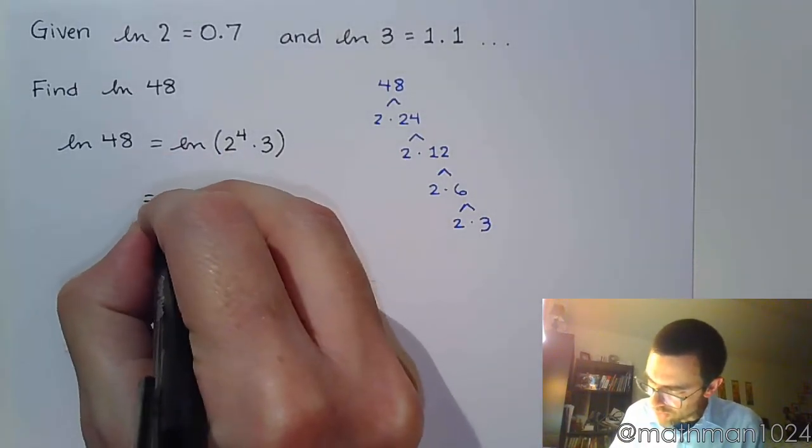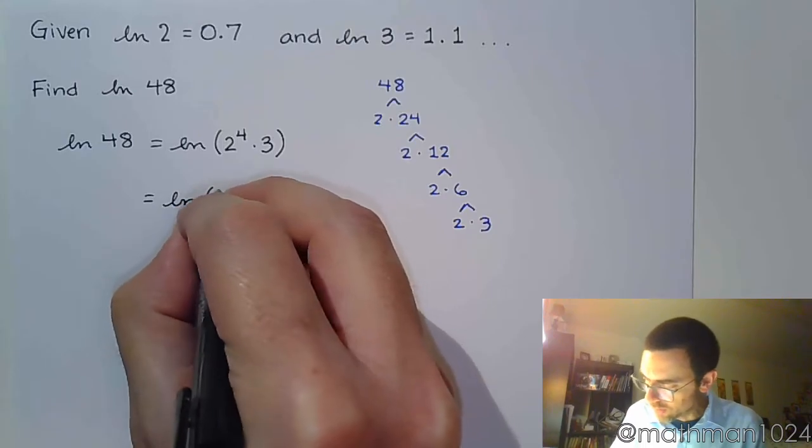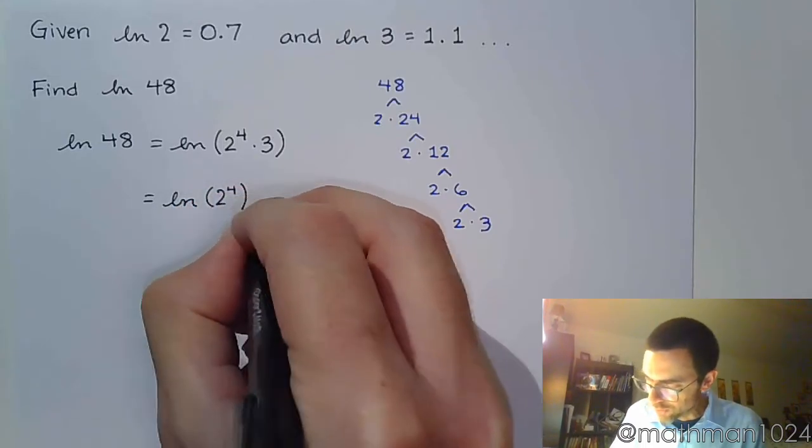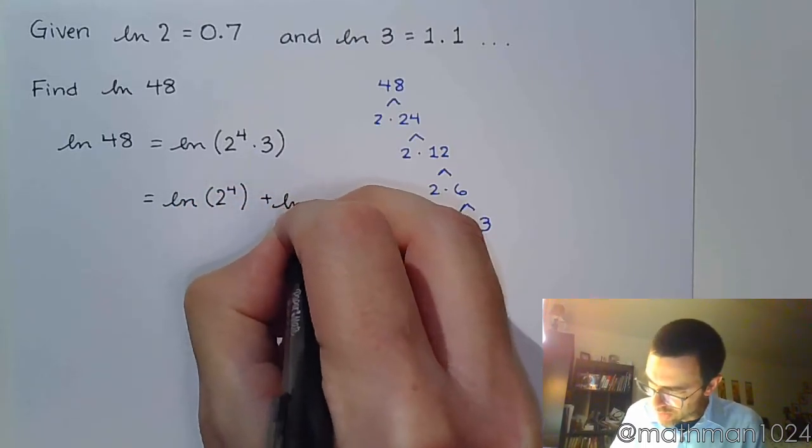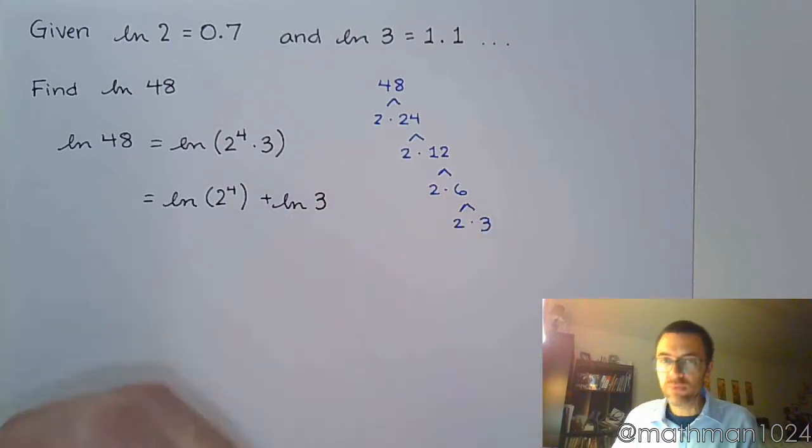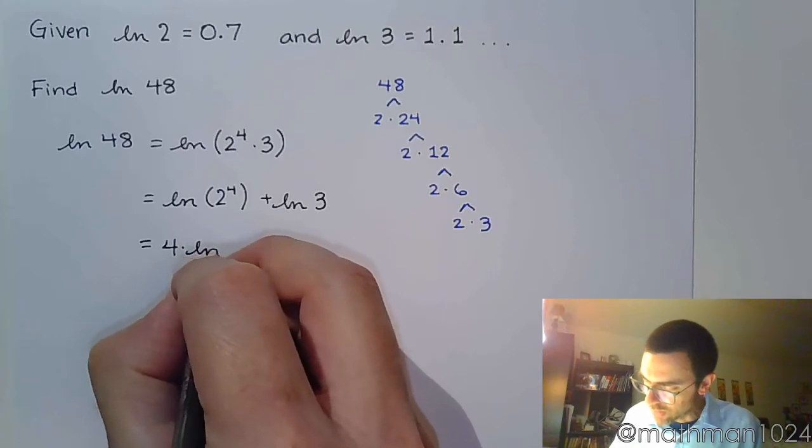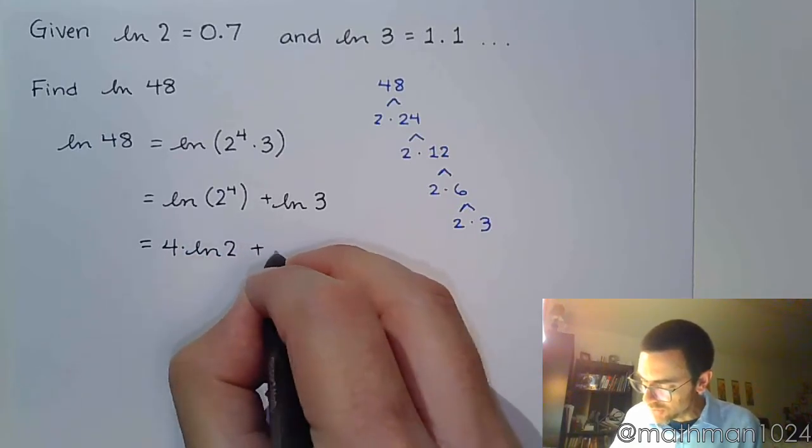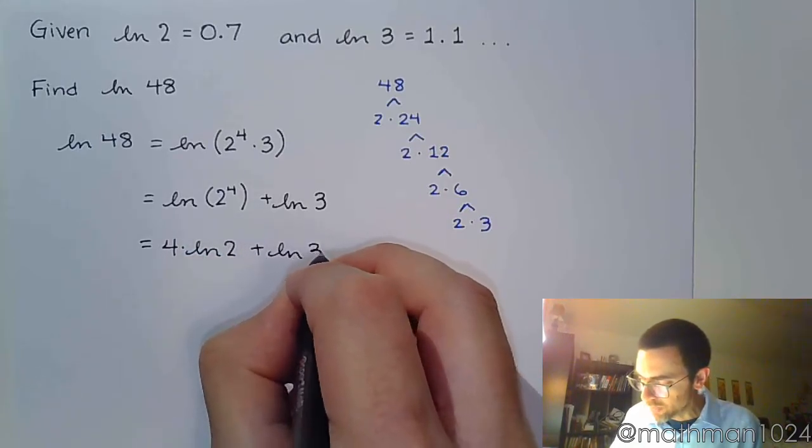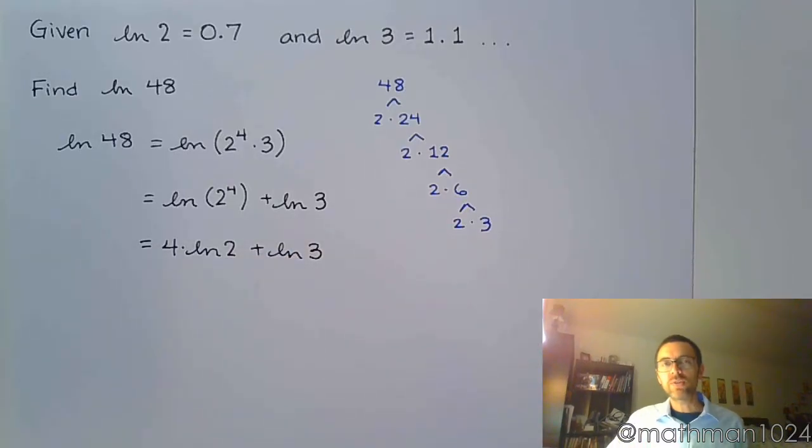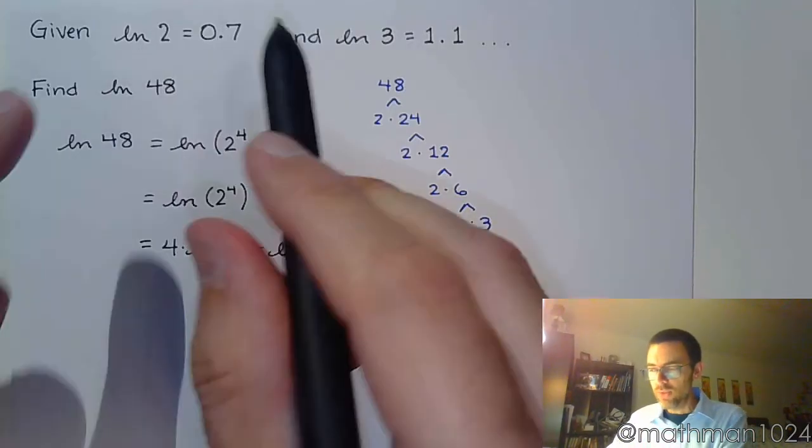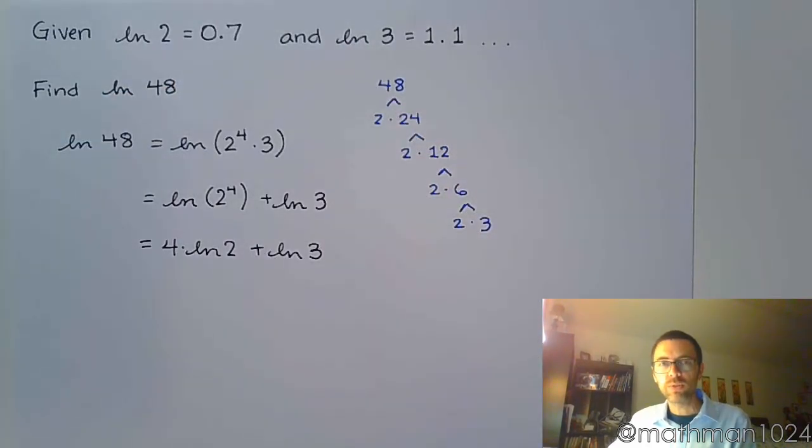So the properties of logarithms would say this now becomes the natural log of 2 to the fourth plus the natural log of 3. And another property of logarithms says that you can take this power and write it out front, to say 4 times the natural log of 2 plus the natural log of 3. So without knowing the natural log of 48, knowing these two natural logs, we can come up with the value for the natural log of 48.